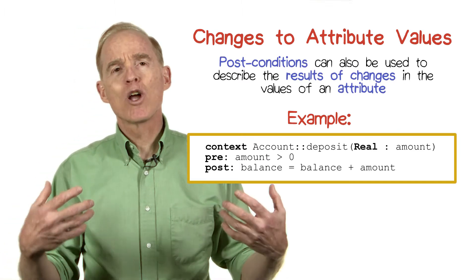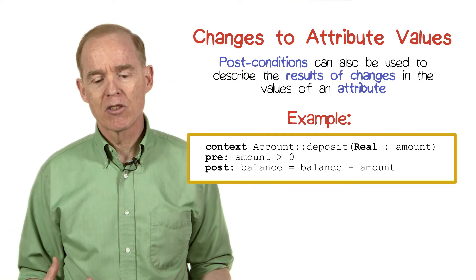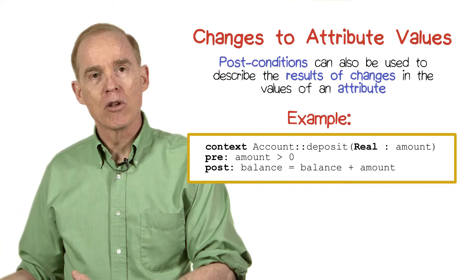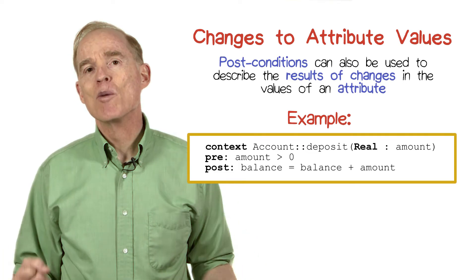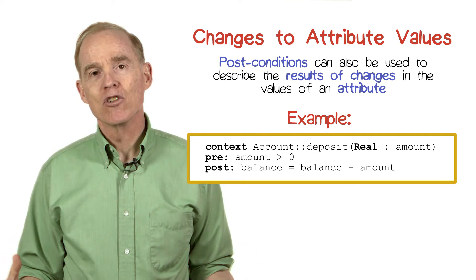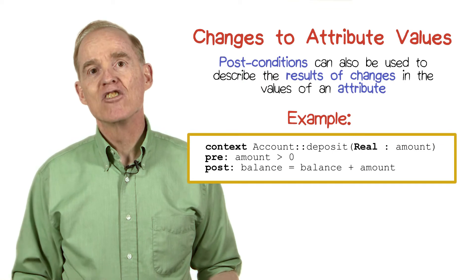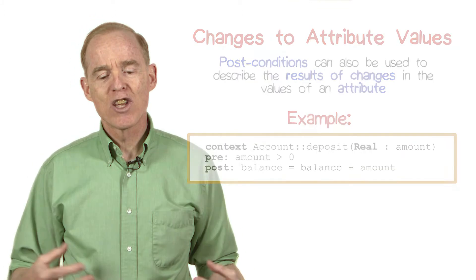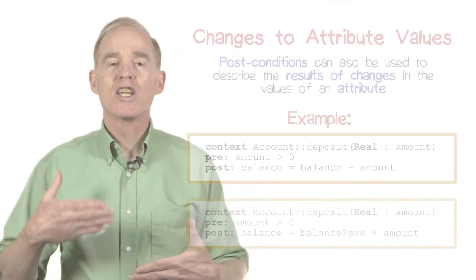We might try to express the postcondition by saying the balance equals balance plus the amount. However, remember that OCL is a declarative language. The equal sign here means equality — it doesn't mean assignment. So what we're saying is the balance equals the balance plus the amount, which can't be the case. That doesn't make sense.